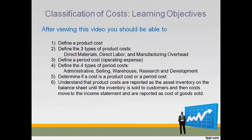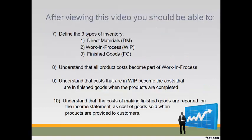After viewing this video, you should be able to define the three types of product costs, define the four types of period costs, and determine if a cost is a product or period cost. You should understand that product costs are reported as the asset inventory on the balance sheet until sold to customers, then moved to the income statement as cost of goods sold. You should also define the three types of inventory, understand that all product costs become part of work in process first, that WIP costs move to finished goods when products are completed, and that the cost of finished goods is reported as cost of goods sold only when products are sold.